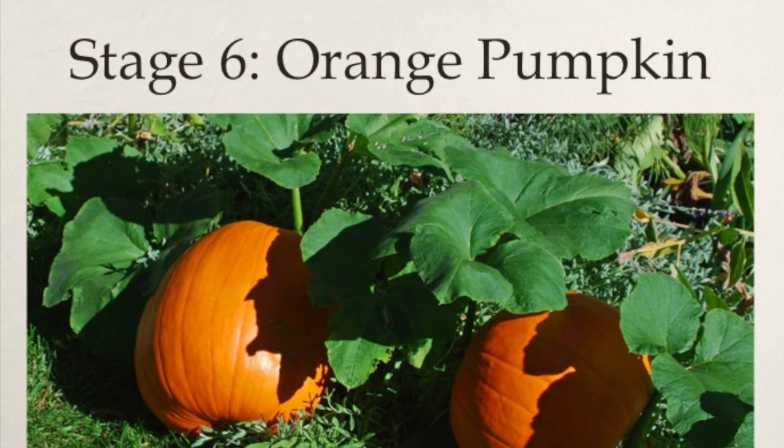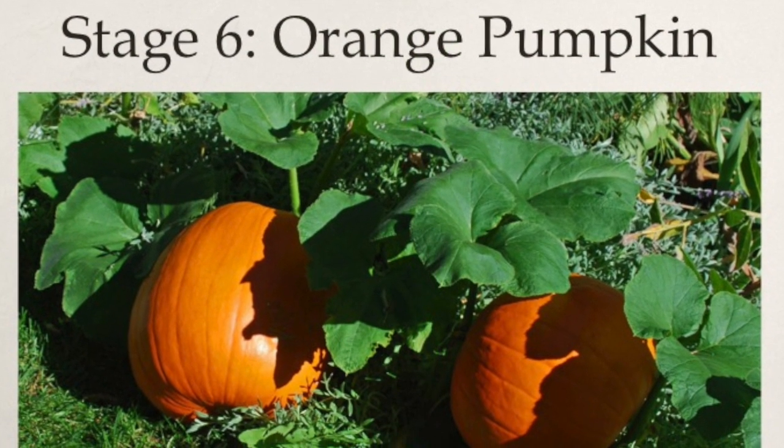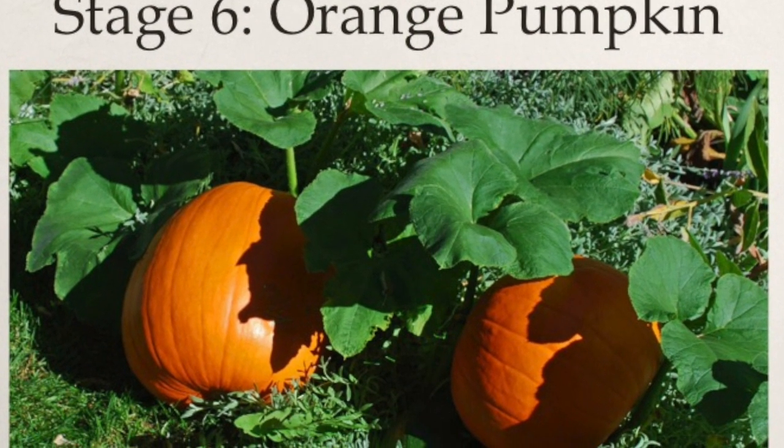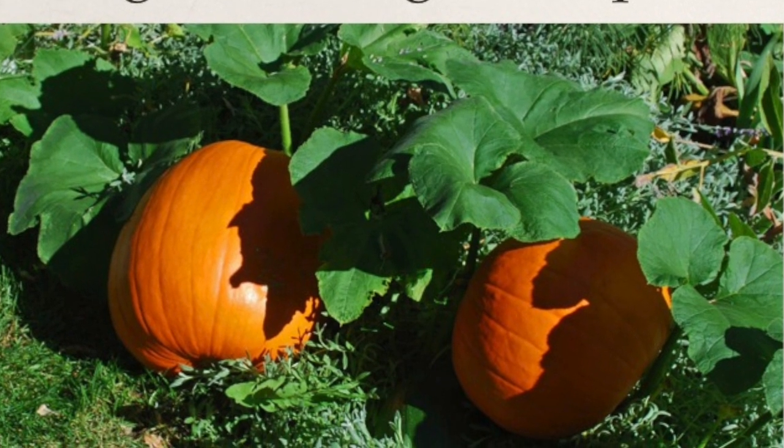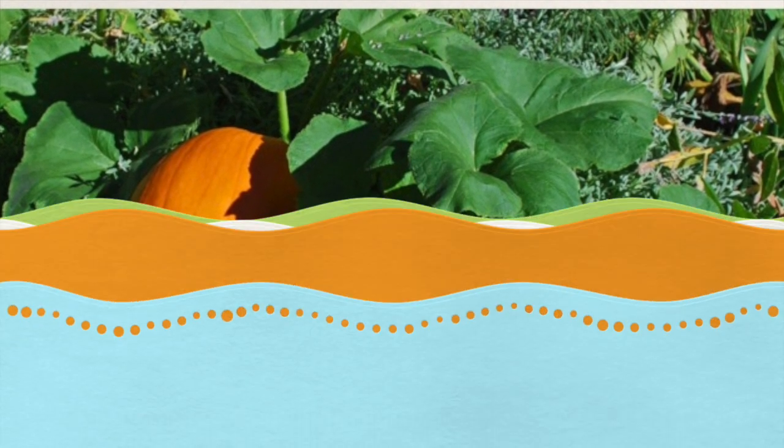Stage six, we find a large orange pumpkin growing on our vine.